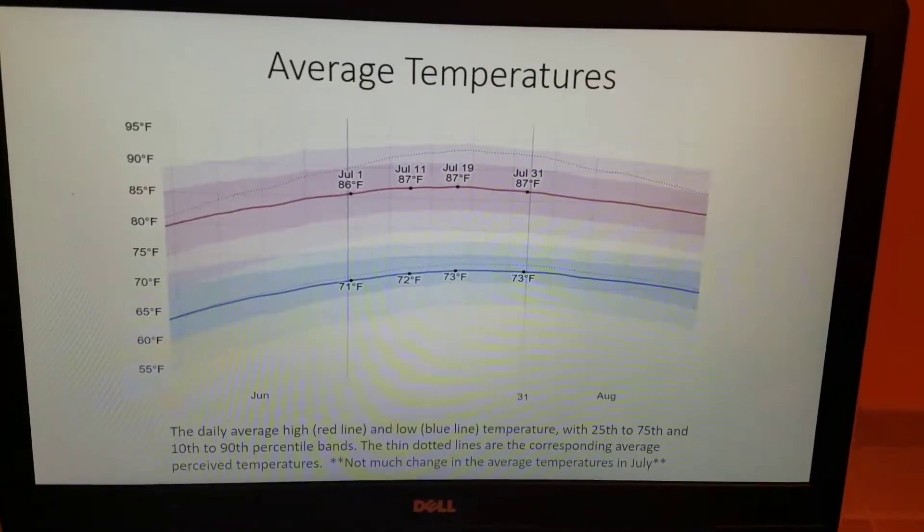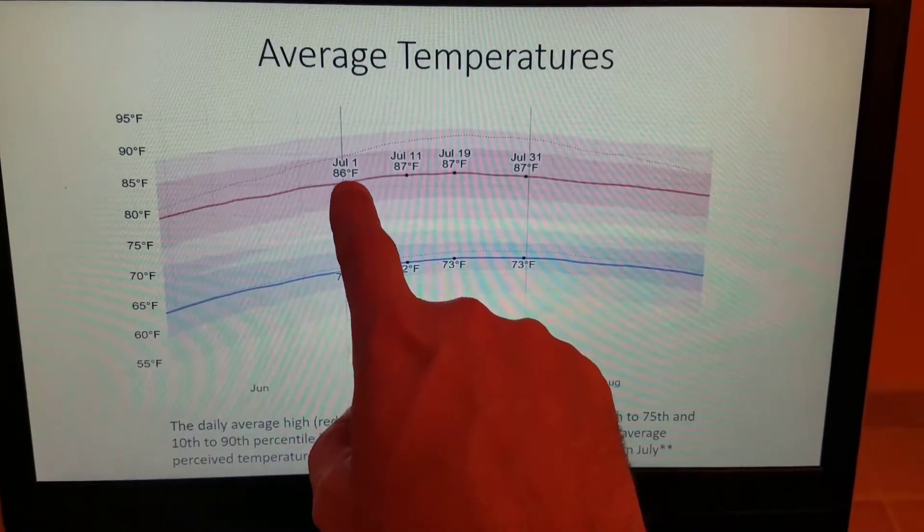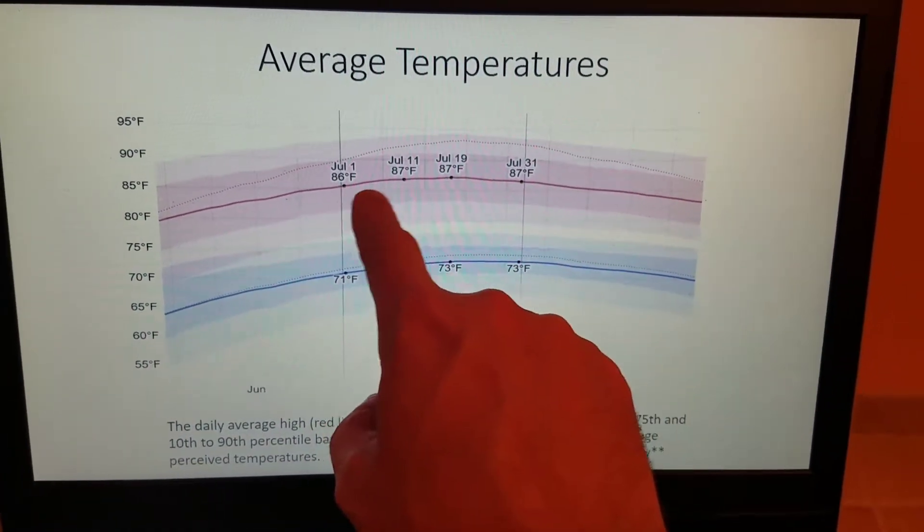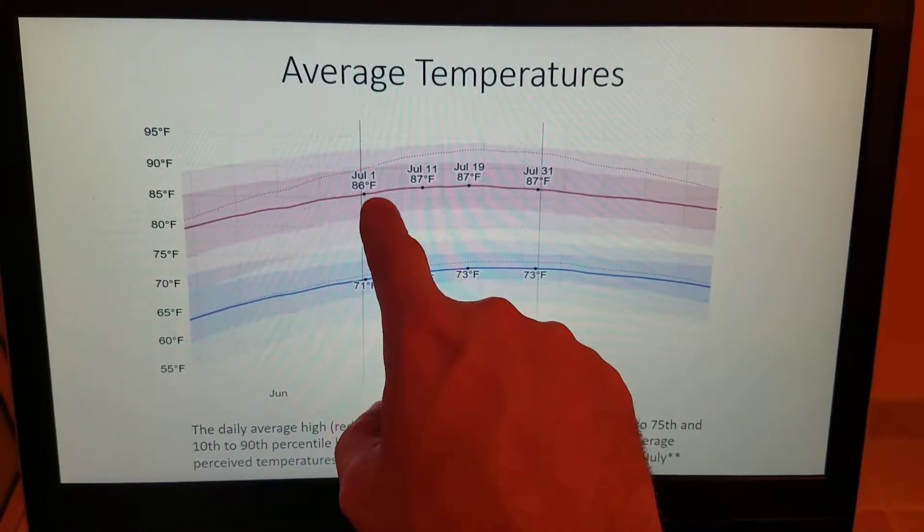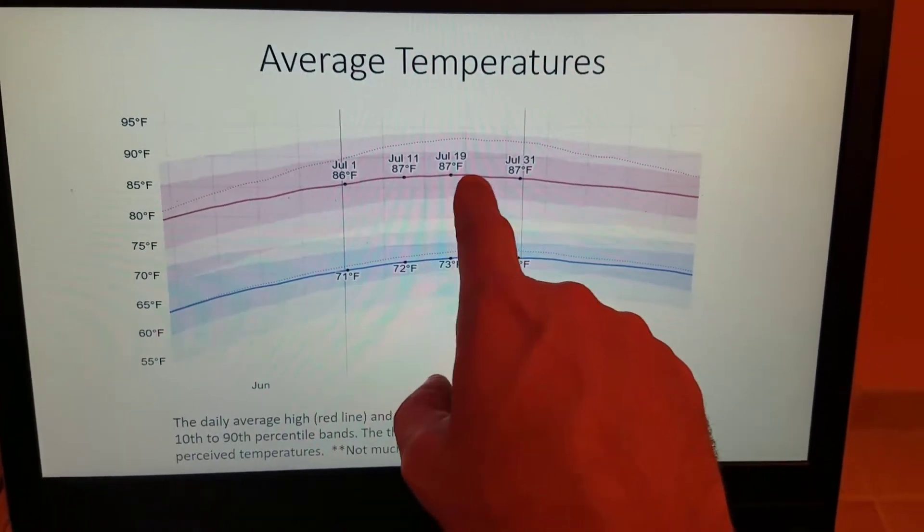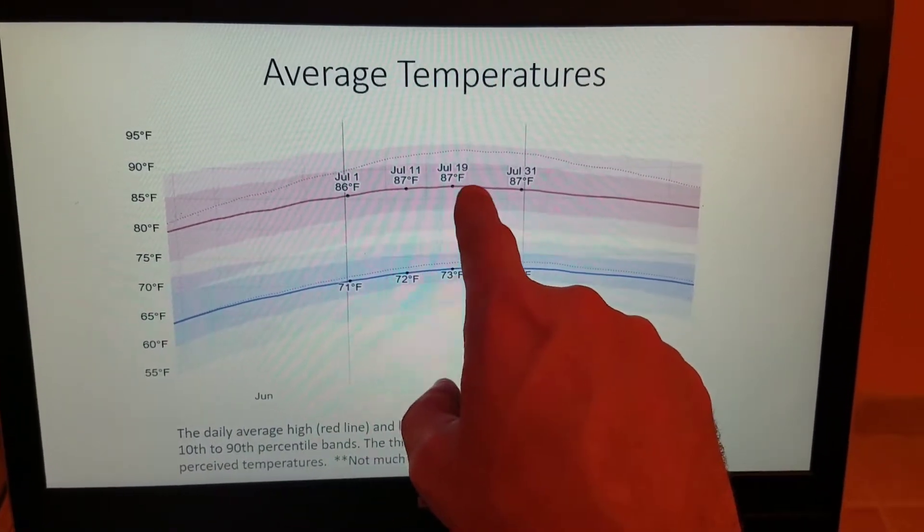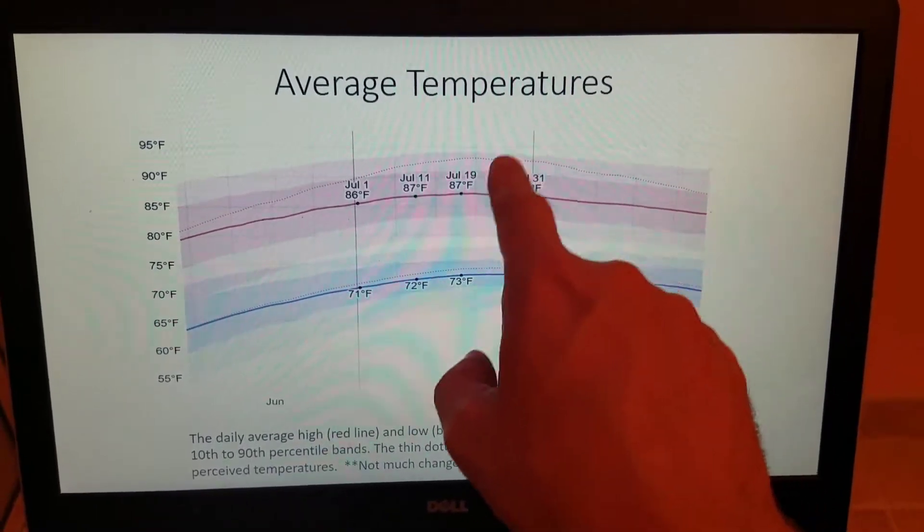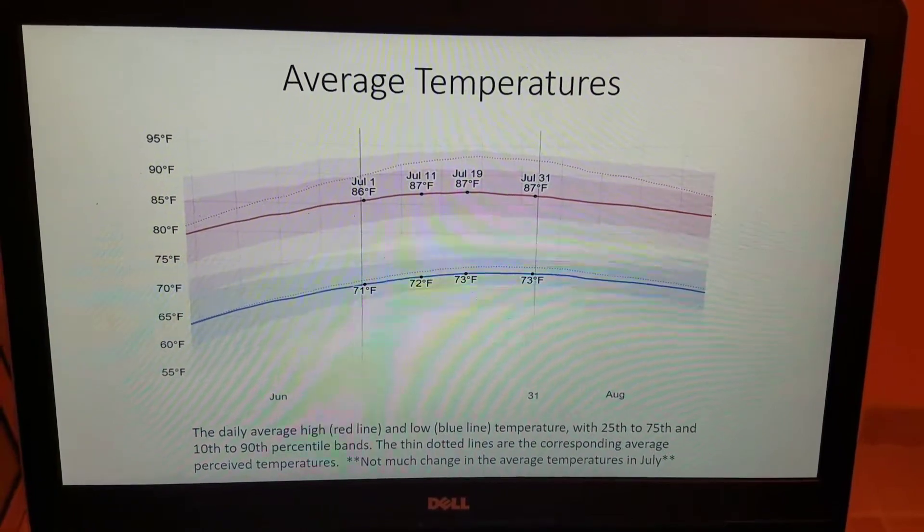Looking at southeast Virginia for the average temperatures in July, there is not much of a change. The red lines here indicate the average high temperatures throughout the month ranging from July 1st to average high of 86 degrees Fahrenheit up to an average high of 87 between the week of July 11th to July 19th and then remaining at an average high of 87 all the way out to the end of the month on July 31st.